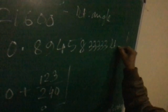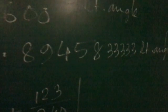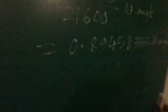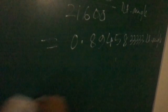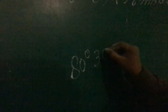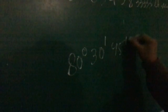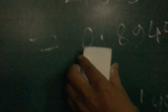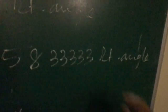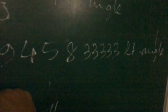So this is the measurement in right angle of a sexagesimal angle which is in the form of degree, minute, and second. The given angle was 80 degree, 30 minutes, 45 seconds. The result is approximately 0.8945833333 right angle. If you take only up to two decimal places, the approximate value will be 0.89.